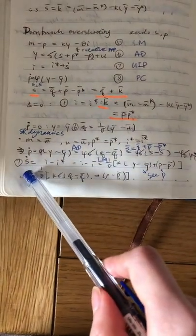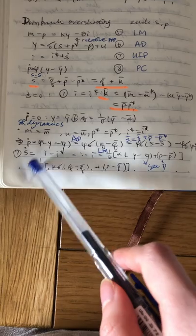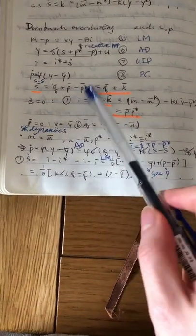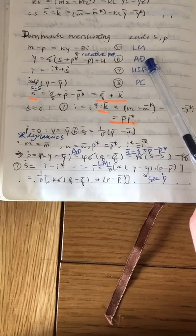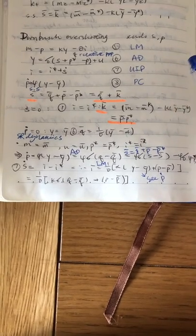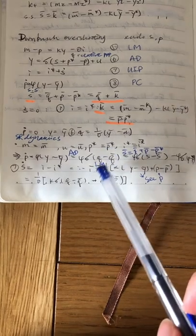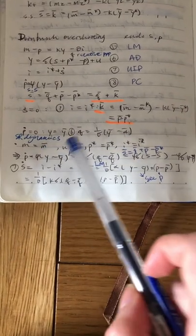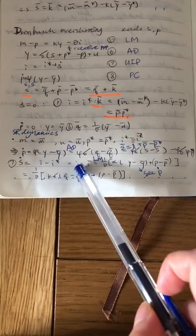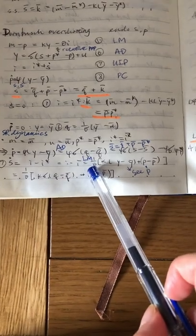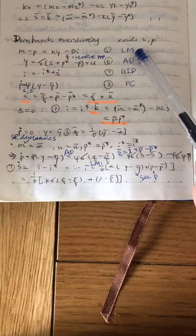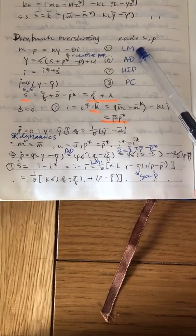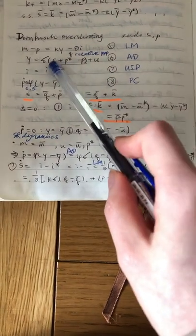And the S equation is deriving in a very similar way. But now we start from S is equal to I minus I star. And then since we have I star is equal to a constant, using the LM function, we have a function of Y and P.